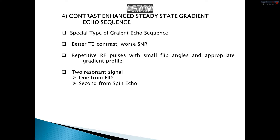Let's talk about our main consideration: contrast enhanced steady state gradient echo sequence. This is a special type of gradient echo sequence. It provides us with better T2 contrast but lower SNR. In this method, we apply repetitive RF pulses with small flip angles and an appropriate gradient profile. As a result of this method, we obtain two resonant signals. One of them comes from FID and the other comes from spin echo.